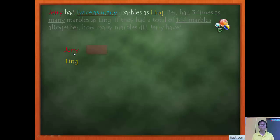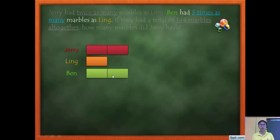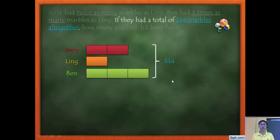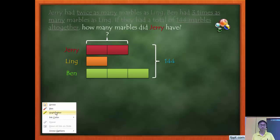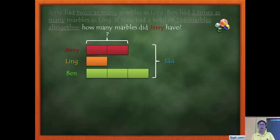Jerry has twice as many as Ling, so Jerry gets 2 units and Ling gets 1 unit. Ben has 3 times as many as Ling, so Ben gets 3 units. The total is 144. Altogether I have 1 plus 2 plus 3 equals 6 units.